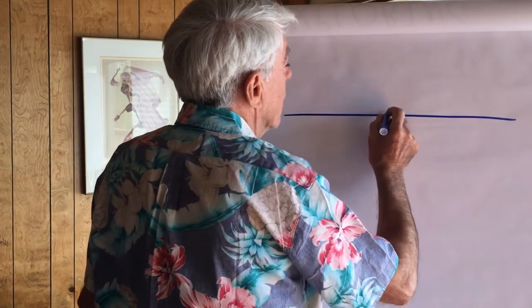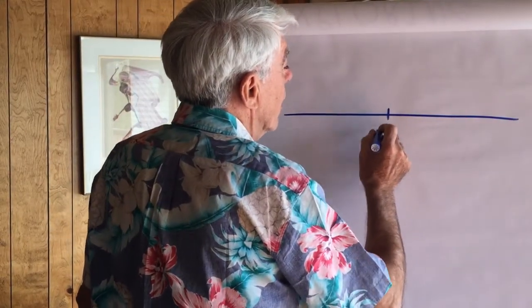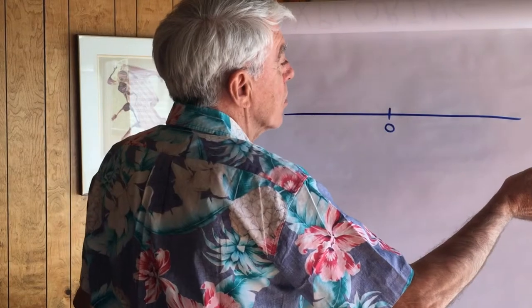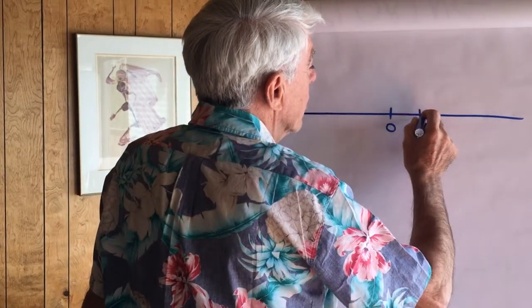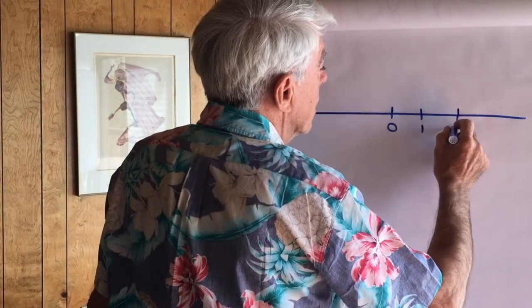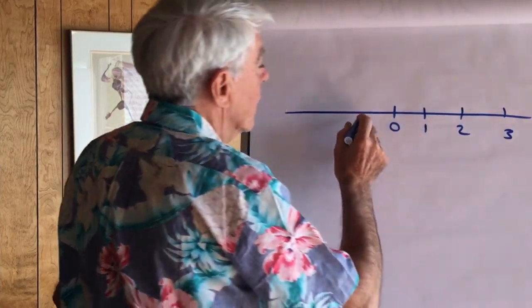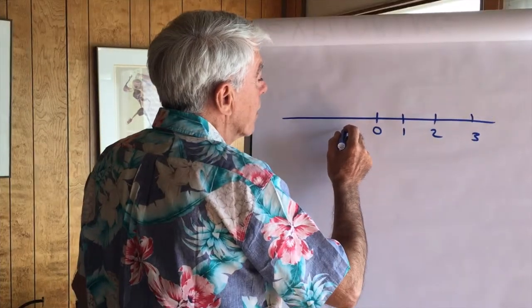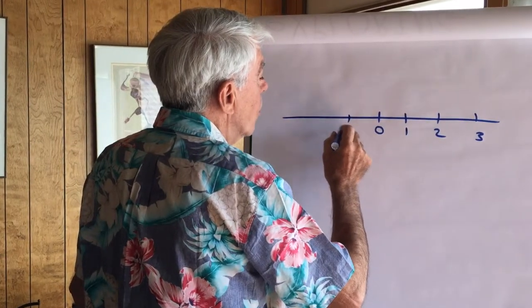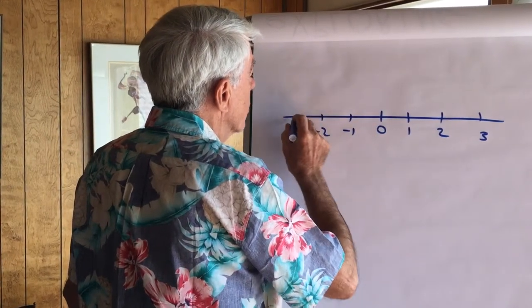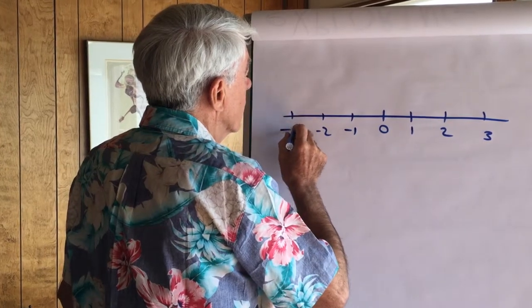Here's the number line. We'll put zero here as a reference. Numbers to the right increase: 1, 2, 3. Numbers to the left decrease: minus 1, minus 2, minus 3.